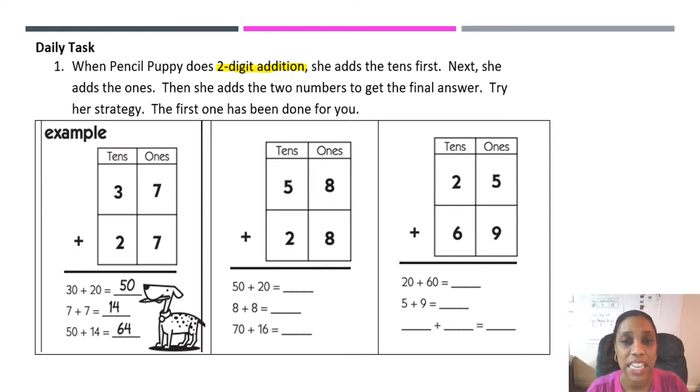She adds the tens first. So next, I'm going to highlight what she does first. She adds the tens in the tens place. Next, that's a transition word. When I see that transition word, it lets me know something happened before. Before that, she added the tens. Now let's see what she's going to do. Next, she adds the ones.